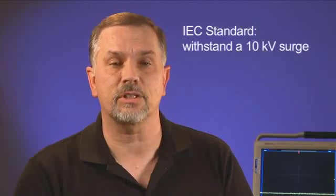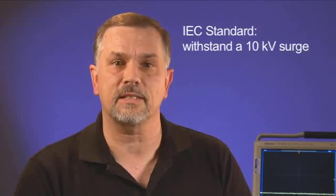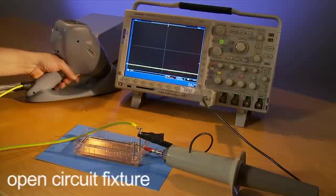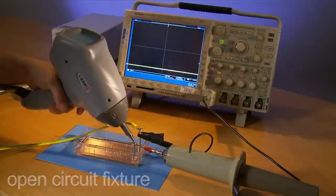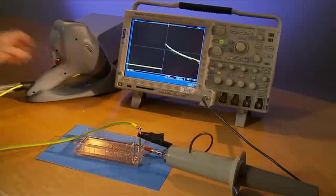The IEC standard requires that every reinforced isolator withstand surges of 10 kilovolts. Let's look at how this type of test is done and see how different types of insulation hold up. We're using an ESD tester and bleed-down resistor to get approximately the waveform we need. Note the fast rise and slow decay peaking at 10 kilovolts of the open-circuit fixture.